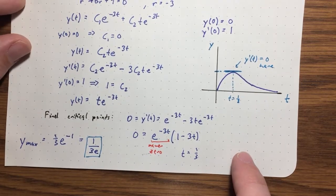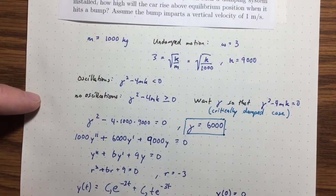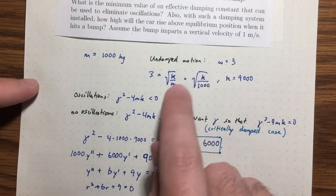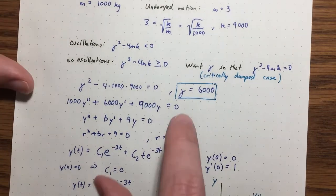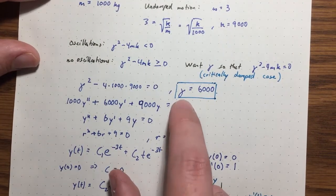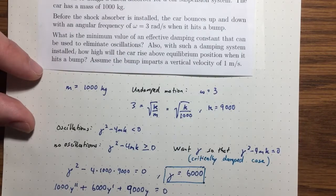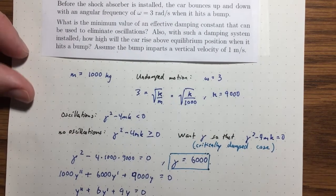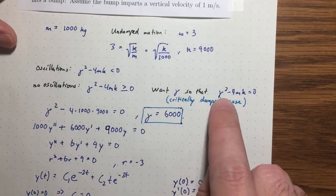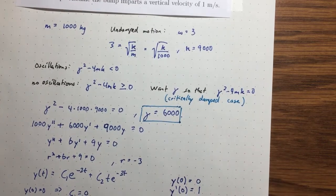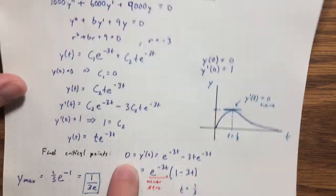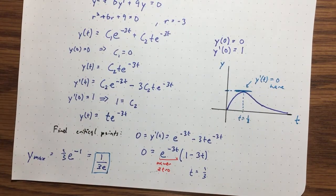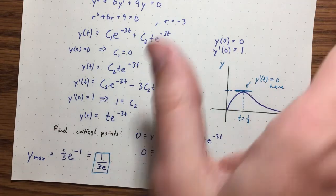This problem goes through several different concepts. We saw the undamped motion and used the formula for ω to find the spring constant. The important part was finding the minimum damping constant that eliminates oscillations — associated with the critically damped case where γ² − 4mk = 0. Finally, we wrote down the differential equation, found the position function, and found its maximum value using calculus.